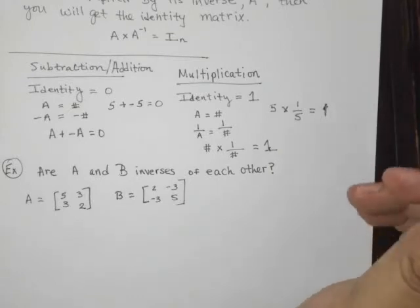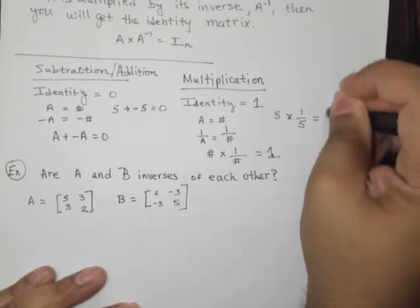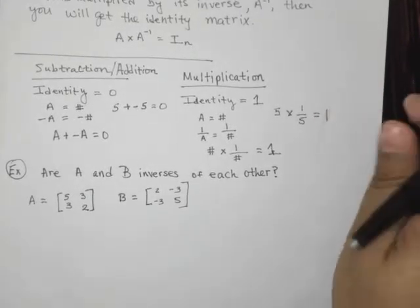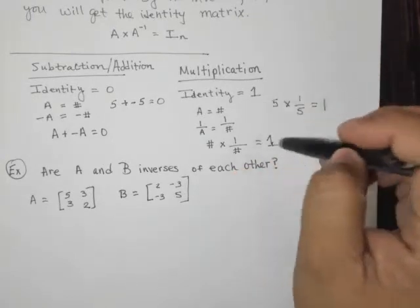So 5 times 1 fifth is just 1. So let me just clean that up for you. So 5 times 1 fifth is just 1. So there is the multiplicative inverse.